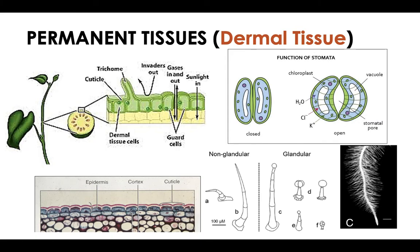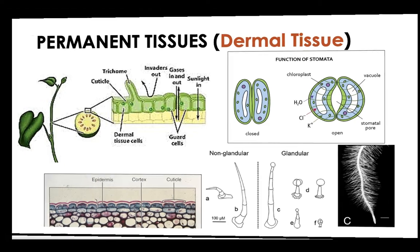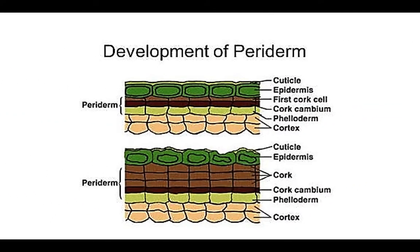The periderm is the outer layer of a plant stem formed during secondary growth. It is composed of the phellem (or cork), phelogen (or cork cambium), and pheloderm (or cork parenchyma). Through active cell division of the phelogen, cells are pushed outwards or inwards — cells pushed inwards are the pheloderm, while cells pushed outwards are the phellem. With continuous deposition of dead cells, a rytidome, or bark, may be produced on older stems or trunks of trees.